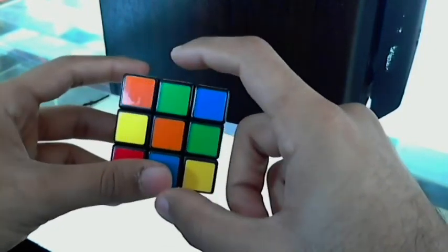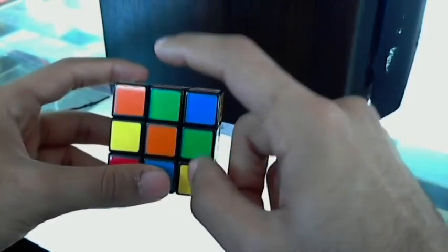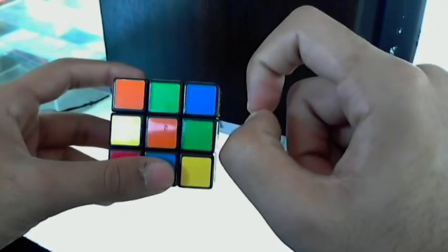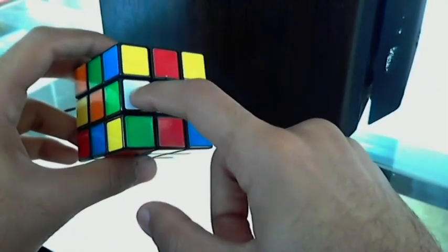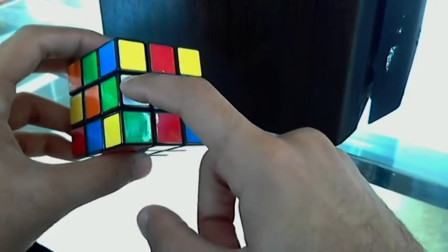So we have to get all the edge pieces in their correct location, creating a green cross on the top. However, you must also match up the edge piece with its corresponding center piece.